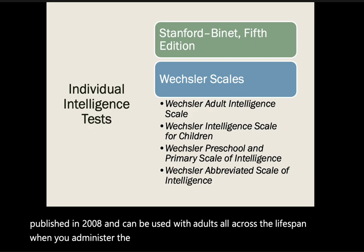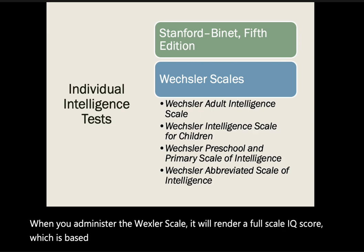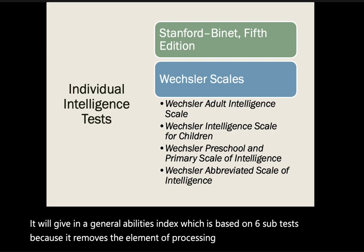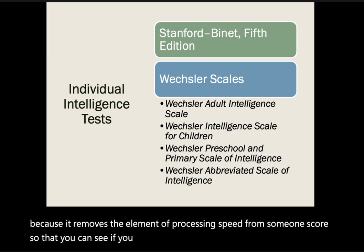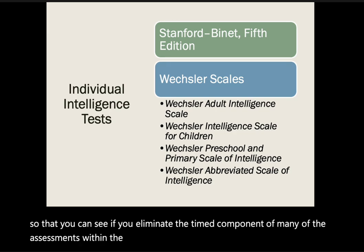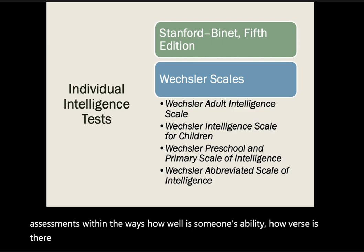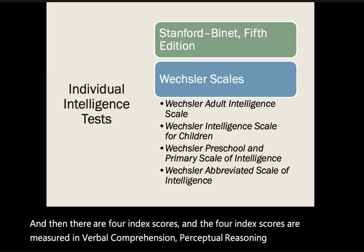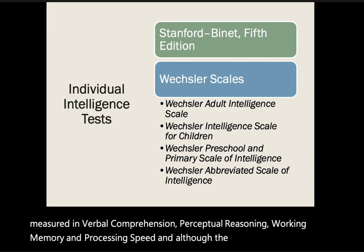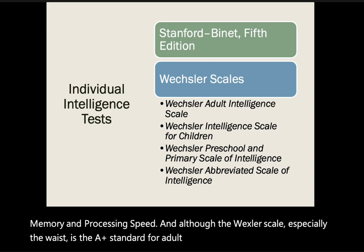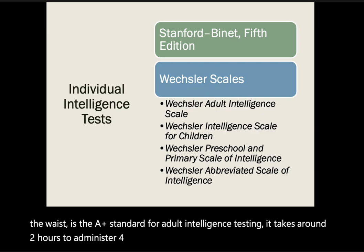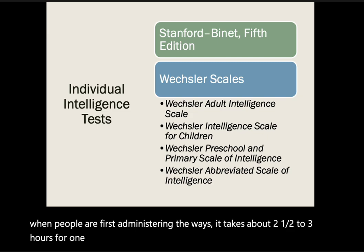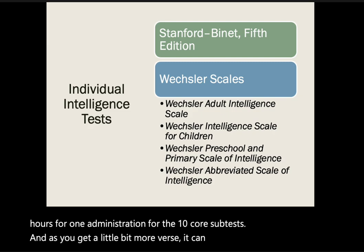When you administer the WAIS, it renders a full-scale IQ score based on seven core subtests, and a general abilities index based on six subtests — removing processing speed from the score to see how well someone performs without the timed component. There are four index scores measuring verbal comprehension, perceptual reasoning, working memory, and processing speed. Administration takes around two hours for examiners versed in the scale; when first learning, it typically takes two and a half to three hours for the ten core subtests.